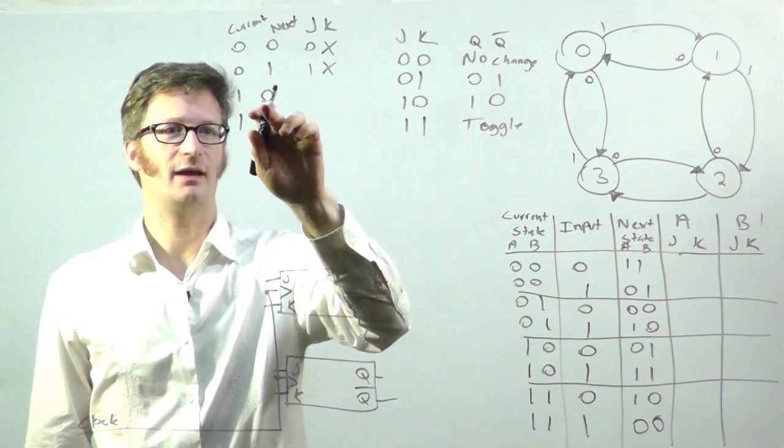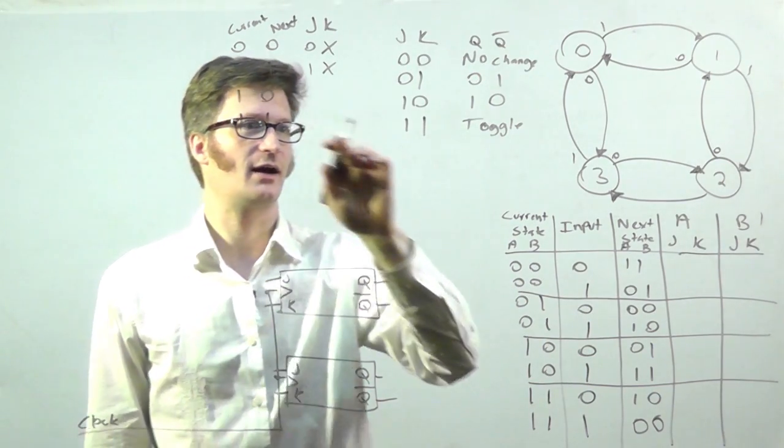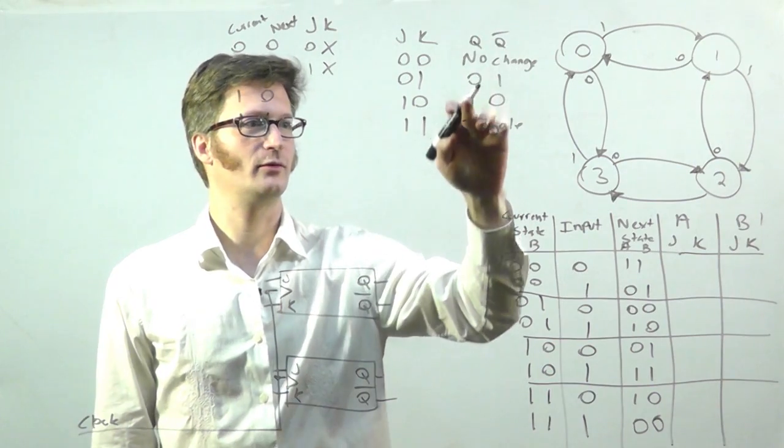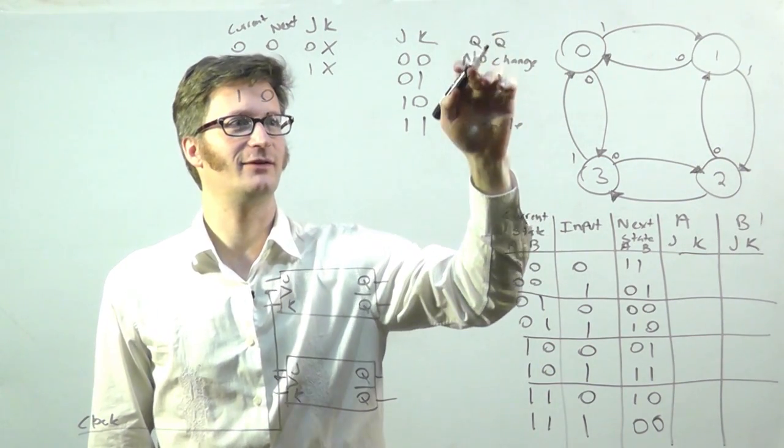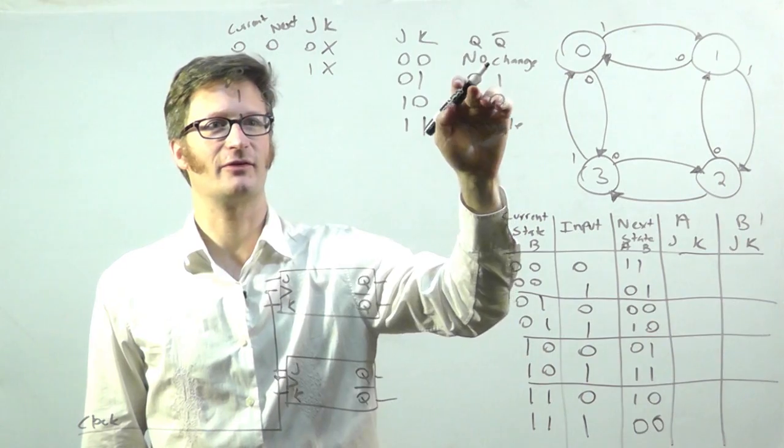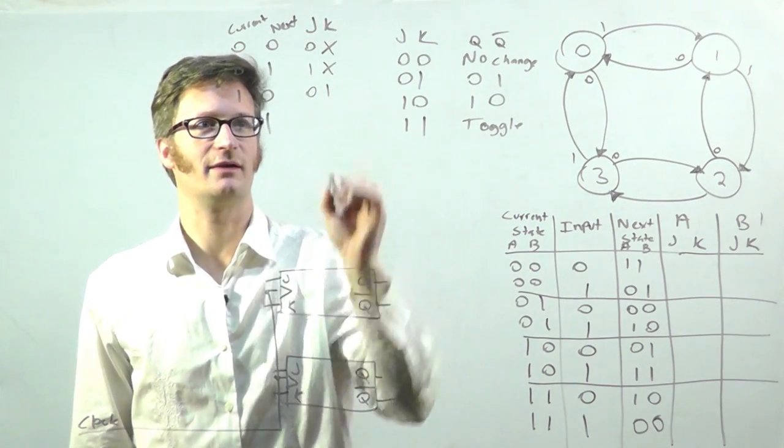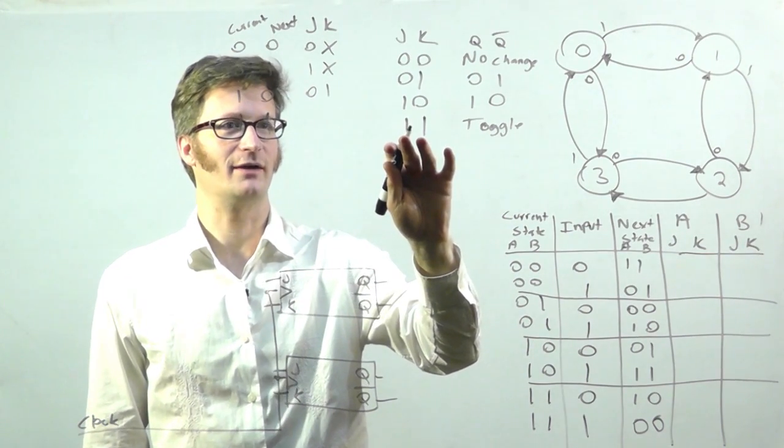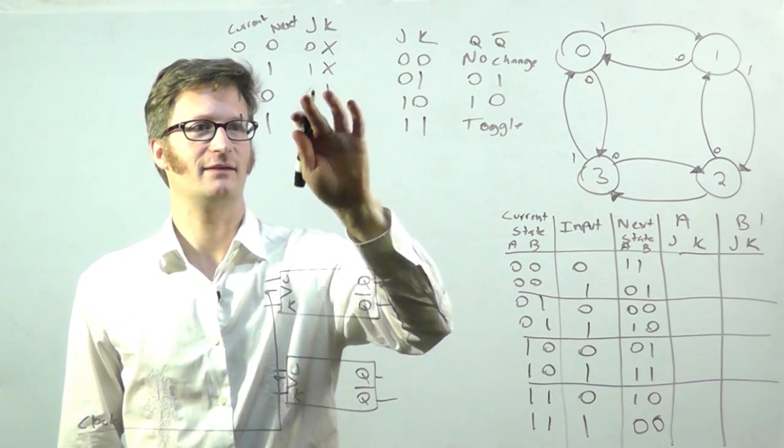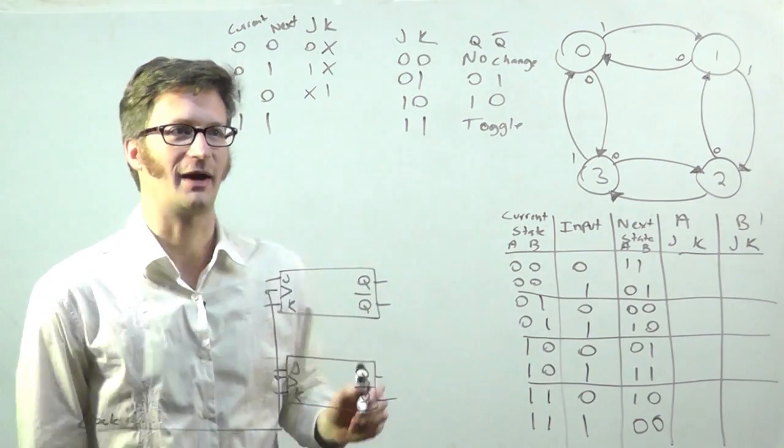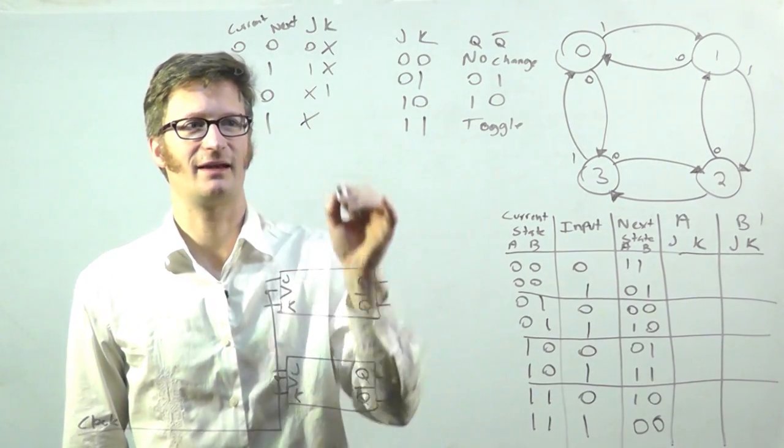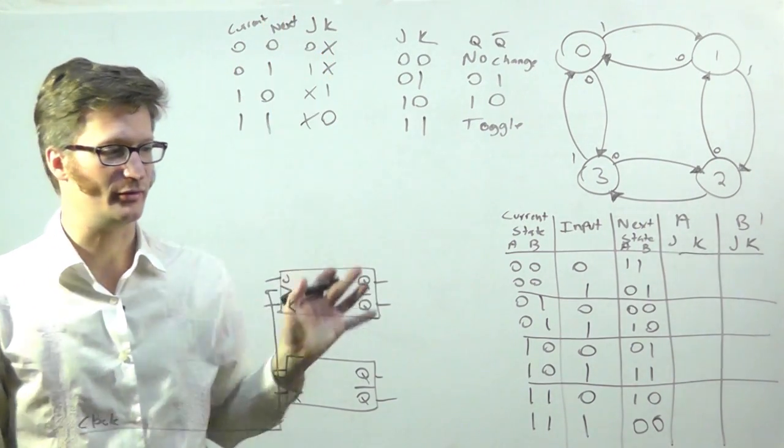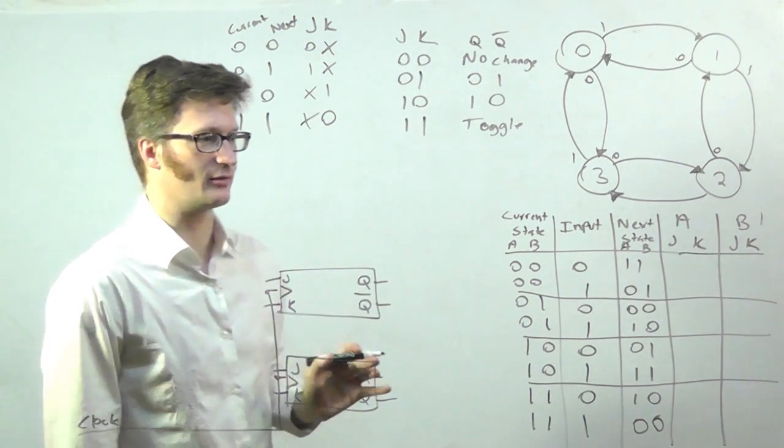If I need it to be one and then a zero, I can say, the Q would be a one, or sorry, I need the Q to be a zero, so I could put zero, one, but again, we have one, one, and so this becomes a doesn't matter, and likewise, the same sort of thing for this. And this is the table that you will use to figure out your logic here.